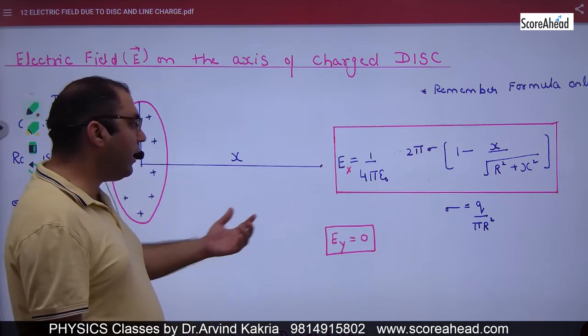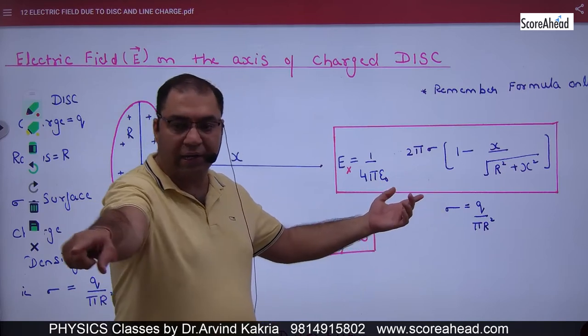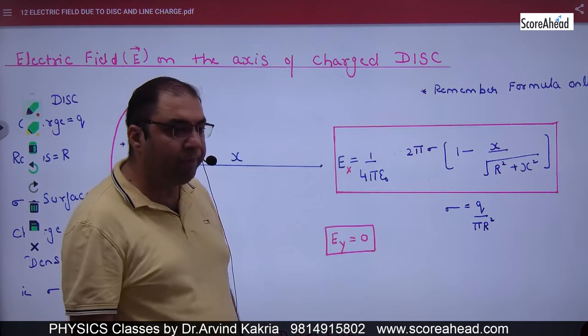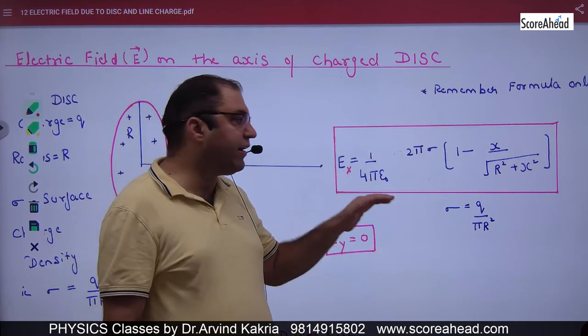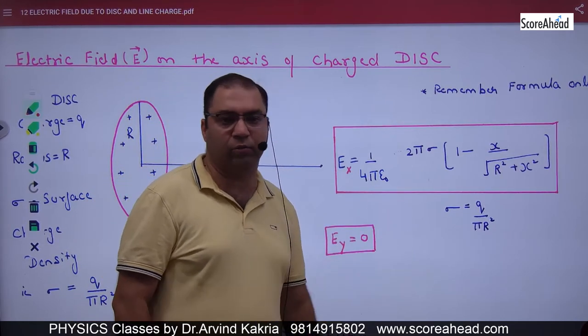Then the net answer will come. Remember, write this point to remember, only formula: 1 by 4π epsilon naught, 2π into sigma, into 1 minus x divided by under root of r square plus x square.